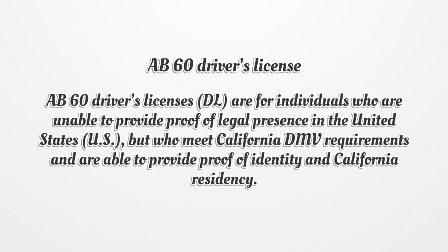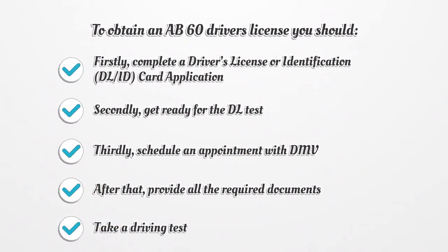AB60 Driver's License. AB60 Driver's Licenses are for individuals who are unable to provide proof of legal presence in the United States, but who meet California DMV requirements and are able to provide proof of identity and California residency. To obtain an AB60 Driver's License you should: firstly, complete a Driver's License or Identification Card Application; secondly, get ready for the DL test; thirdly, schedule an appointment with DMV; after that, provide all the required documents; and take a driving test.